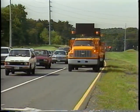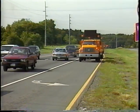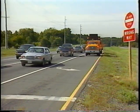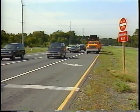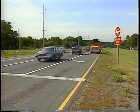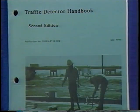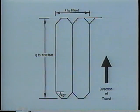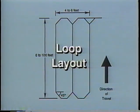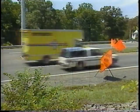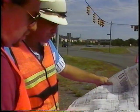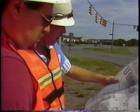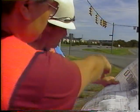Using a six-foot by thirty-foot quadrupole loop example, we will discuss loop detector installation basics step by step. For more details and information on loop installation alternatives, please refer to your handbook. The first step in detector installation is loop layout.